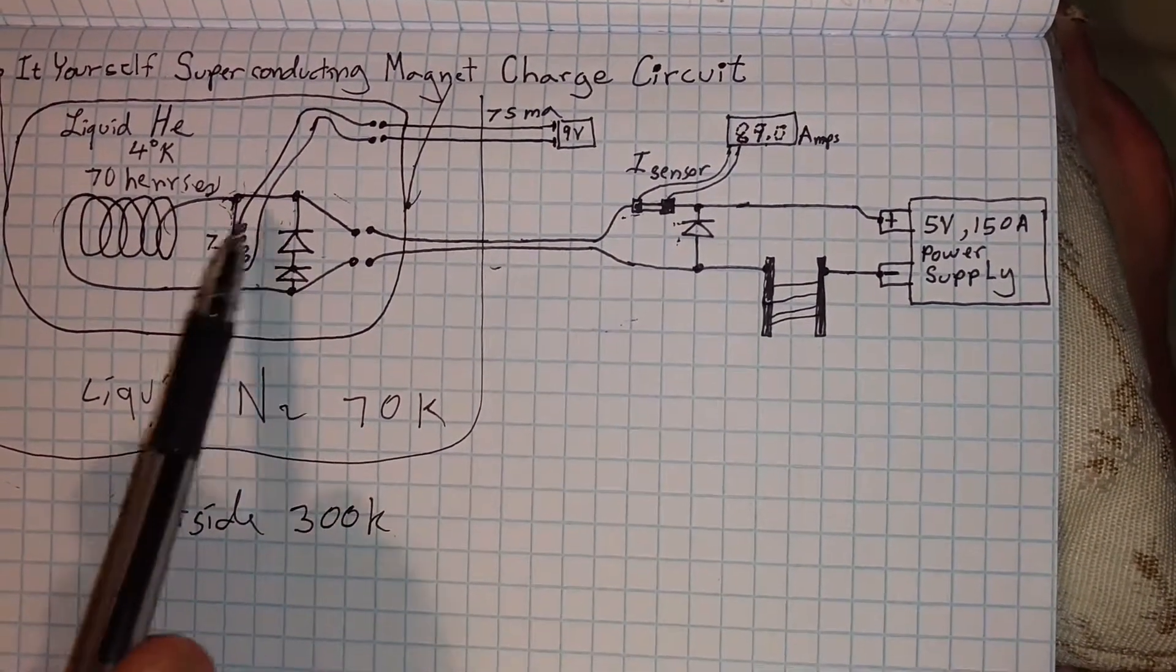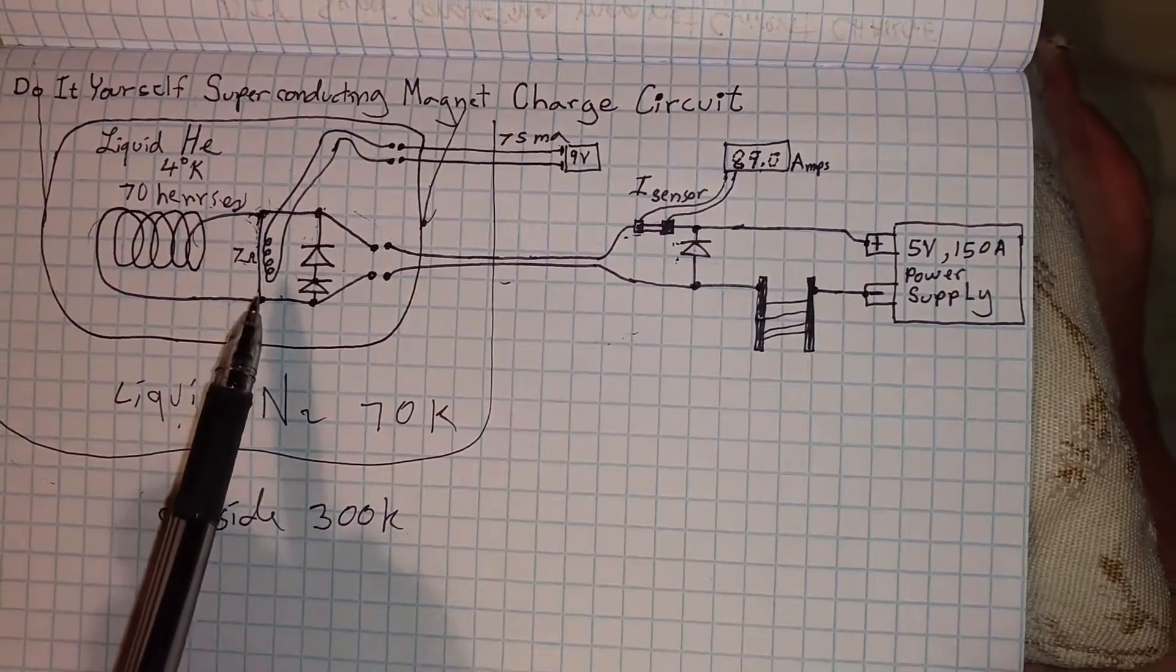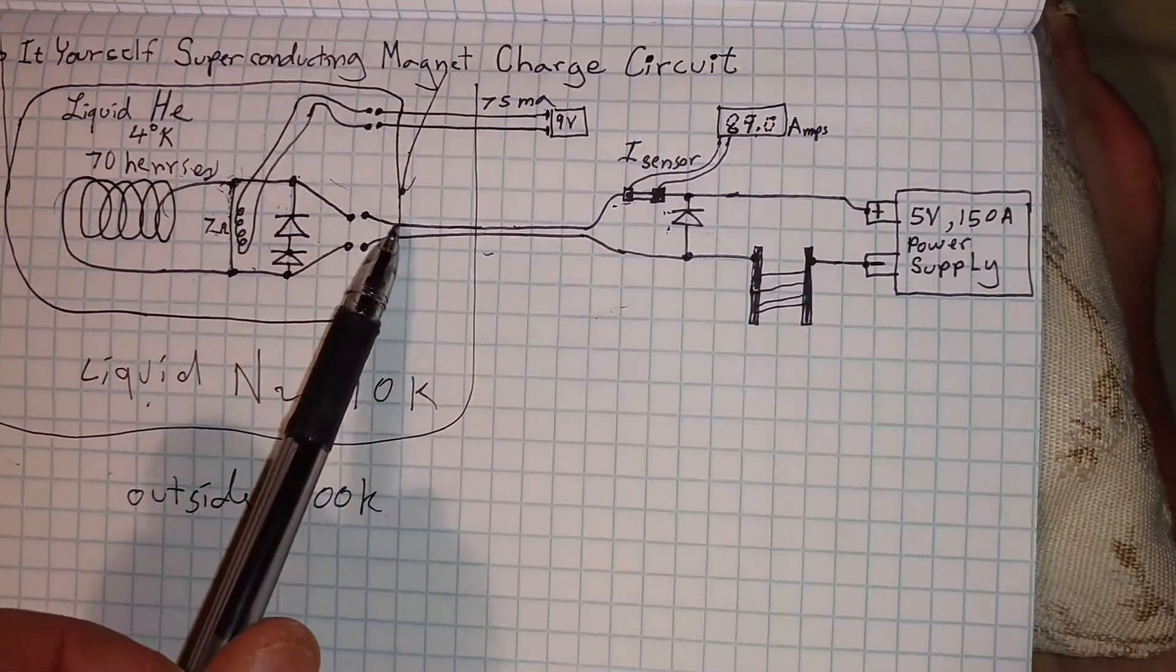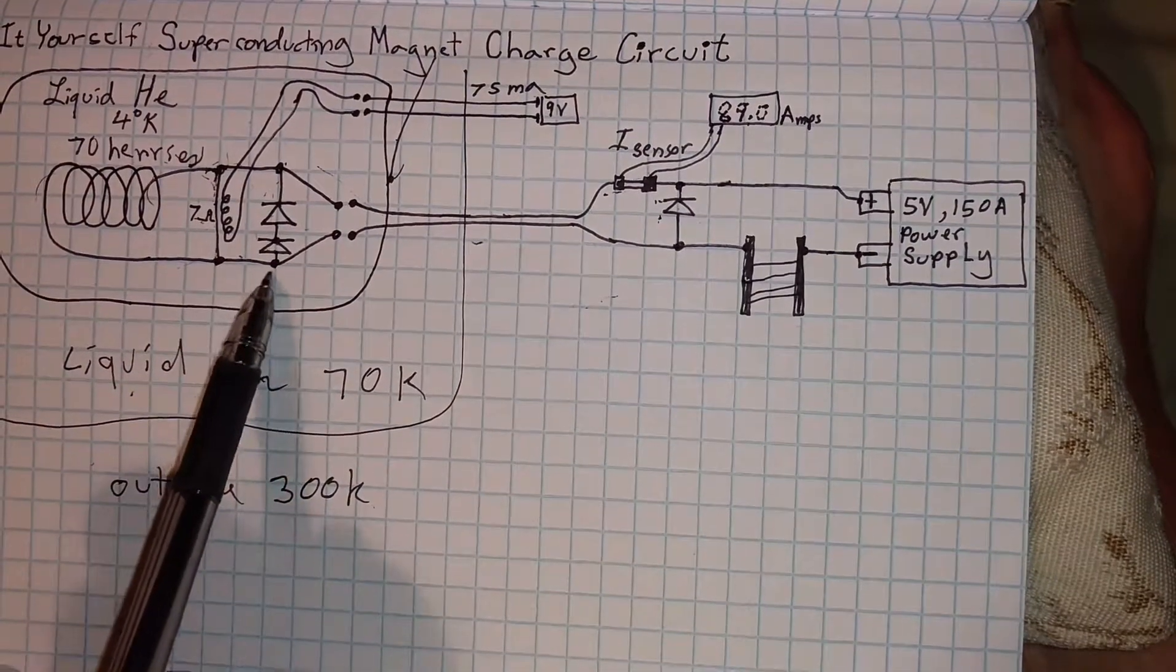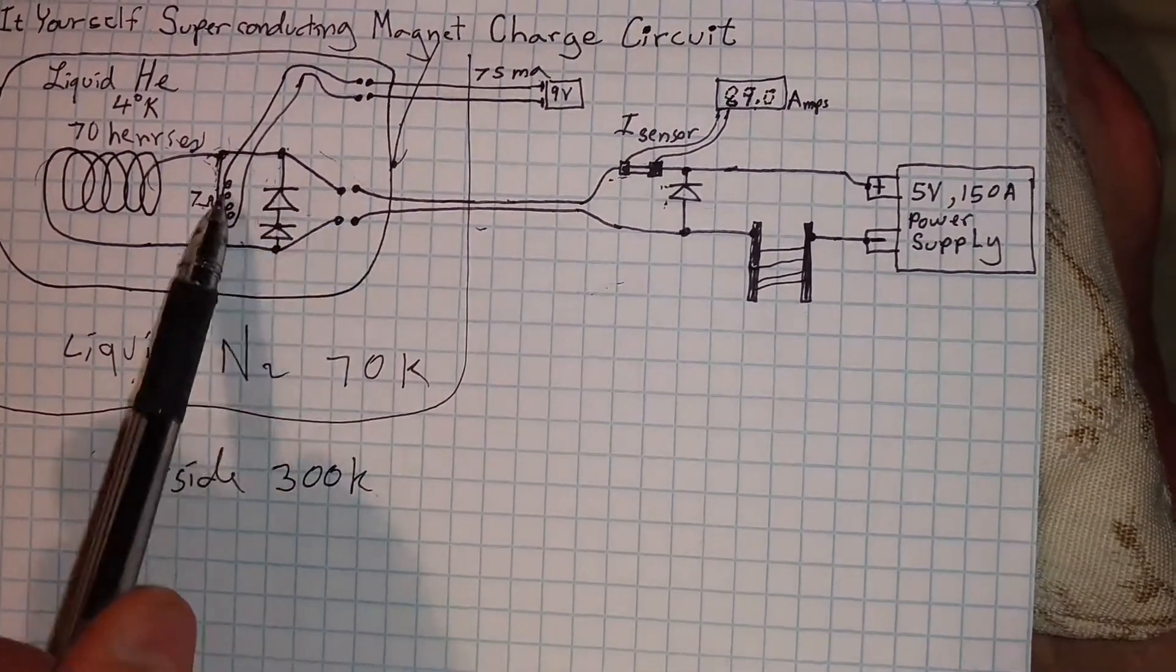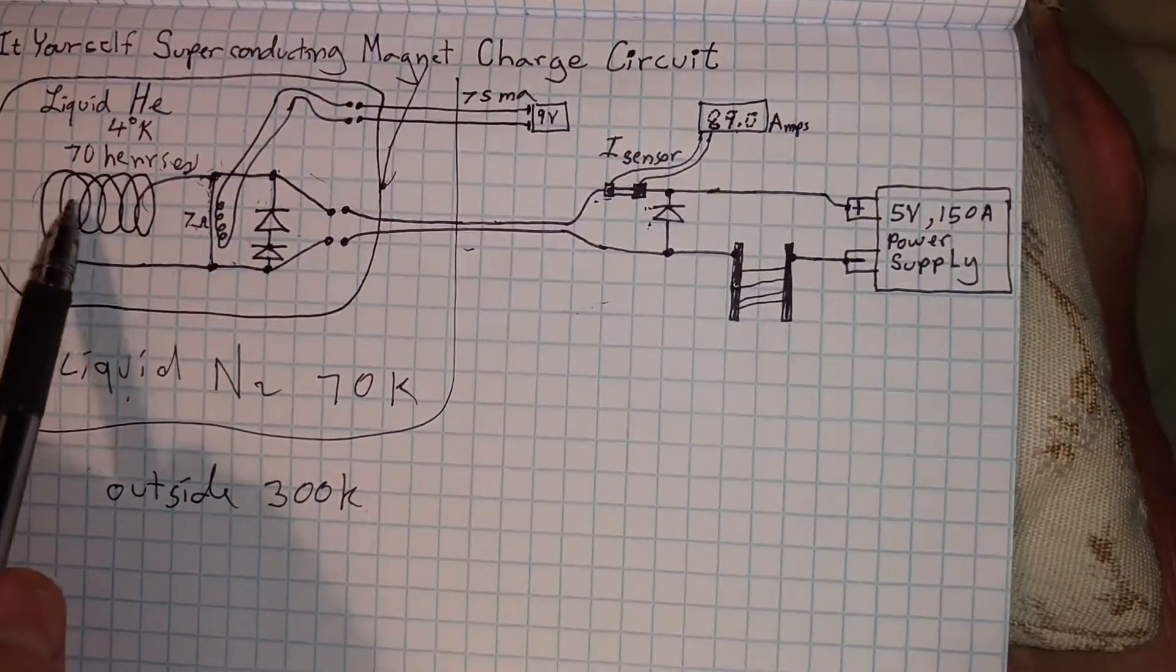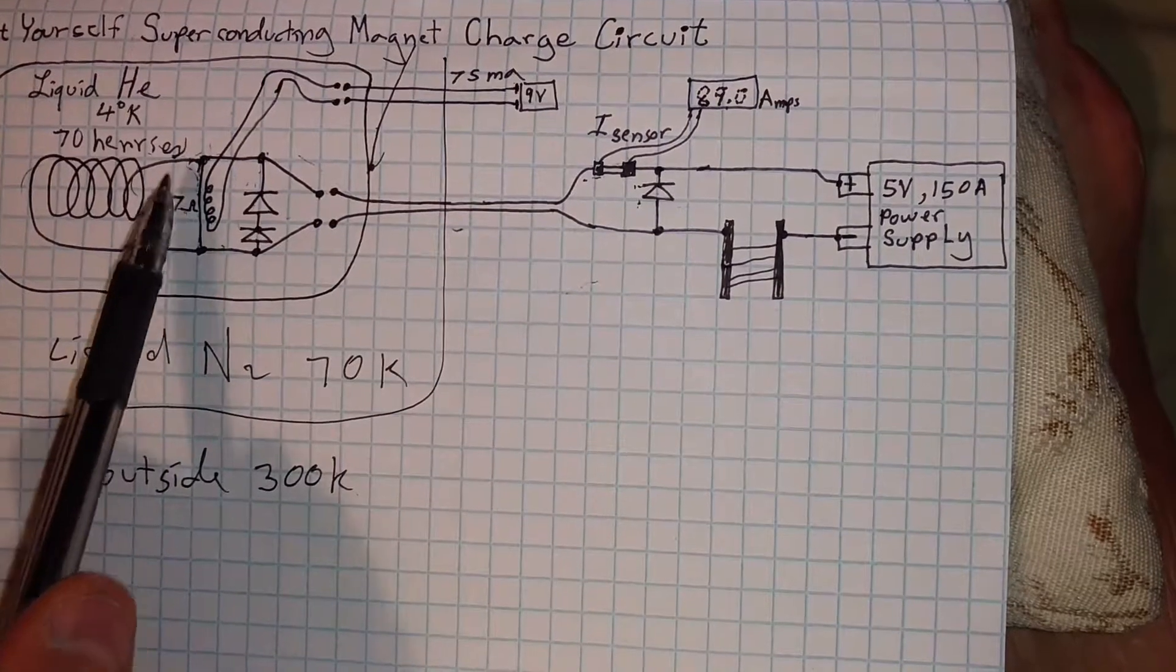That's the trick in getting energy into this coil. If it was still zero ohms at superconducting, if you were to try to connect an outside current, it would zip through that zero ohm section but it wouldn't really go on to charge up this coil.